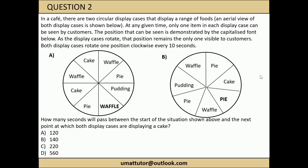The question asks how many seconds will pass before both display cases are displaying a cake - very similar to how the previous question asked for the next point where all traffic lights showed green. The procedure is similar: begin with cabinet A and work out the various points in time where a cake will become visible by rotating into the visible position where the waffle currently is. In 10 seconds the pudding will be visible, 20 seconds for the pie, 30 for waffle, 40 for cake.